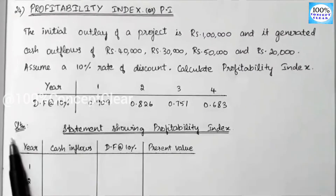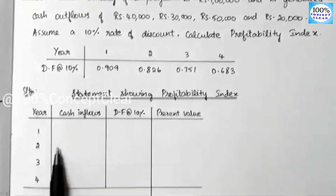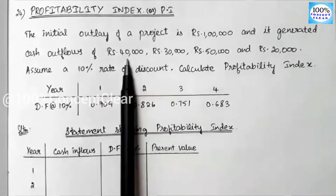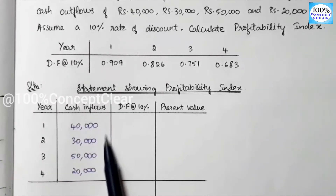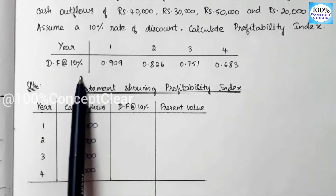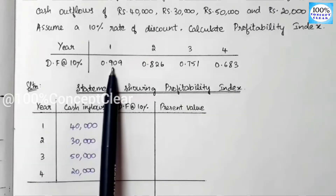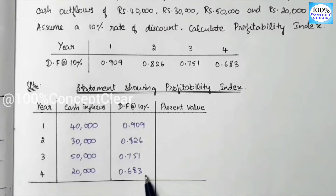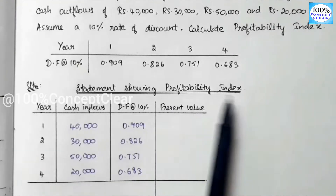Now we will start the solution. Statement showing Profitability Index. We have 4 years. The cash inflows are: Year 1 — 40,000; Year 2 — 30,000; Year 3 — 50,000; Year 4 — 20,000. Next, the Discounting Factor at 10% for each year: Year 1 is 0.909 and Year 2 is 0.826.